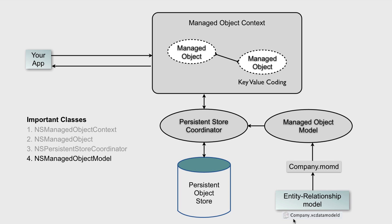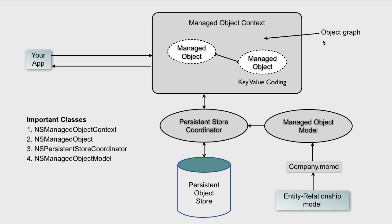Once the context, the coordinator, and the model are created, you can start to fill the context with managed objects. These objects will have connections between them, and the result is a dynamic object graph. Note that the model is created before runtime, but the object graph is created during runtime and can change at any moment.